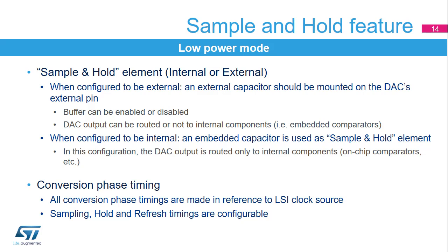The capacitor can be external or internal. When it is external, the buffer can be used and the DAC's output can also be routed to internal components such as embedded comparators. When it is internal, an embedded capacitor is used and the DAC's output is routed only to internal components. The charging time depends on the capacitor value. The timings for the three phases are in units of LSICK clock cycles.